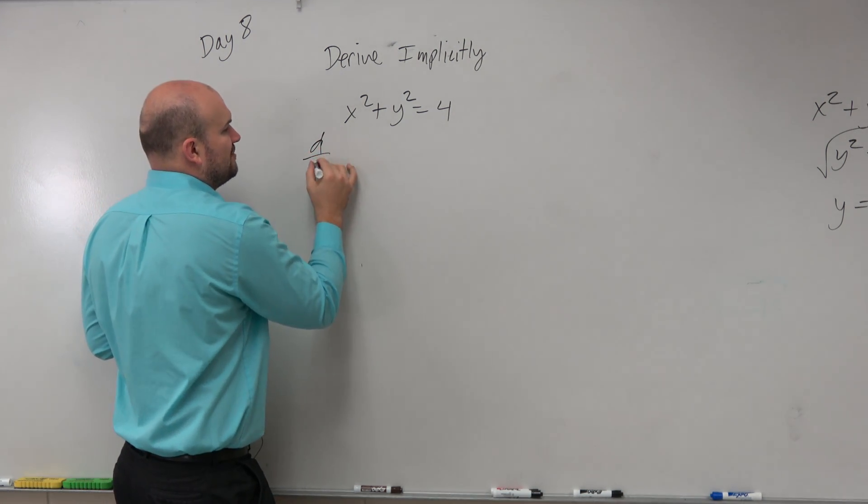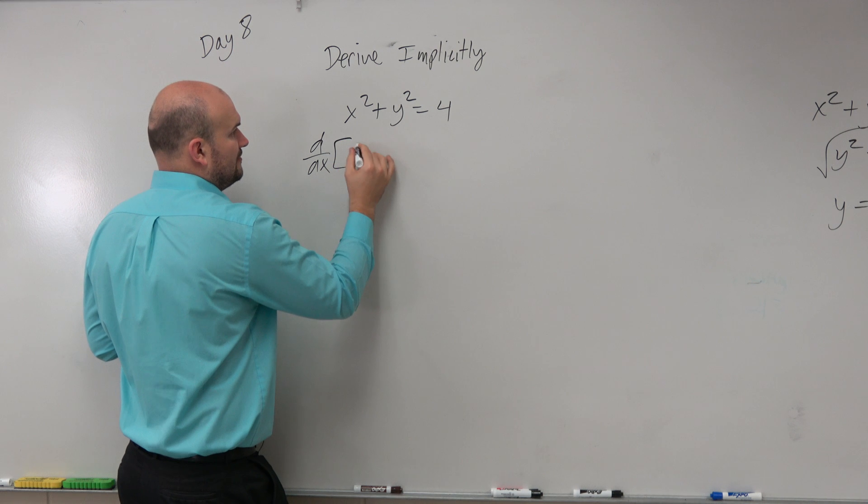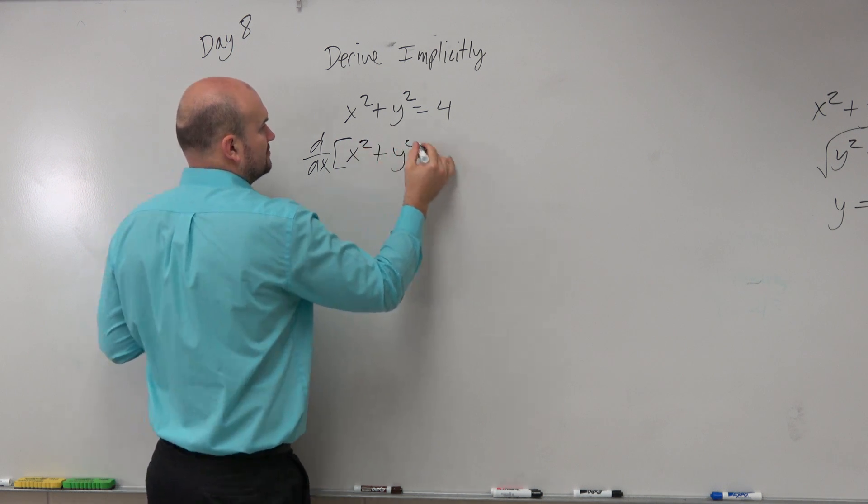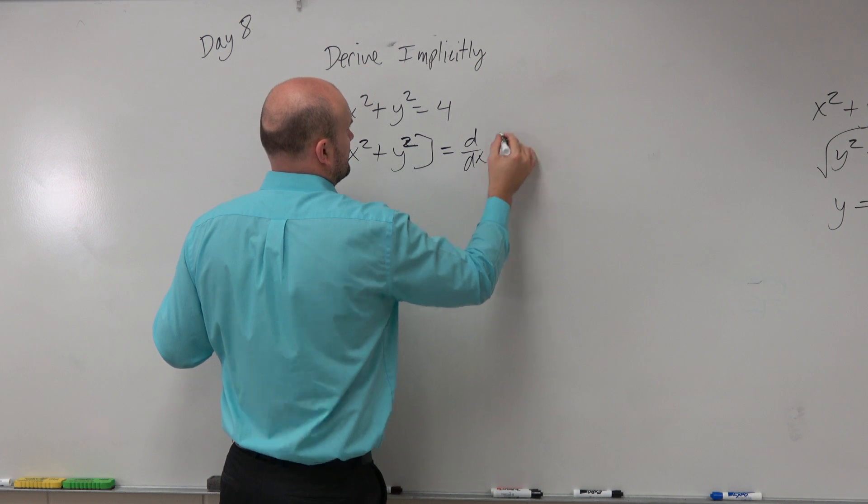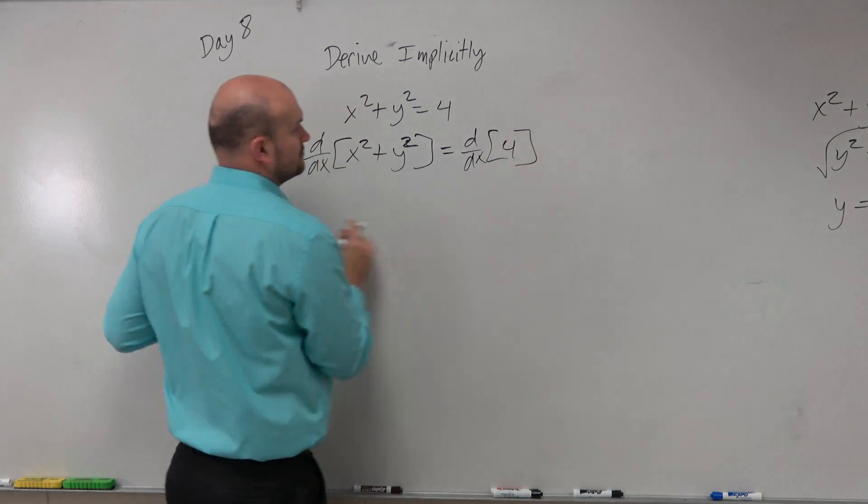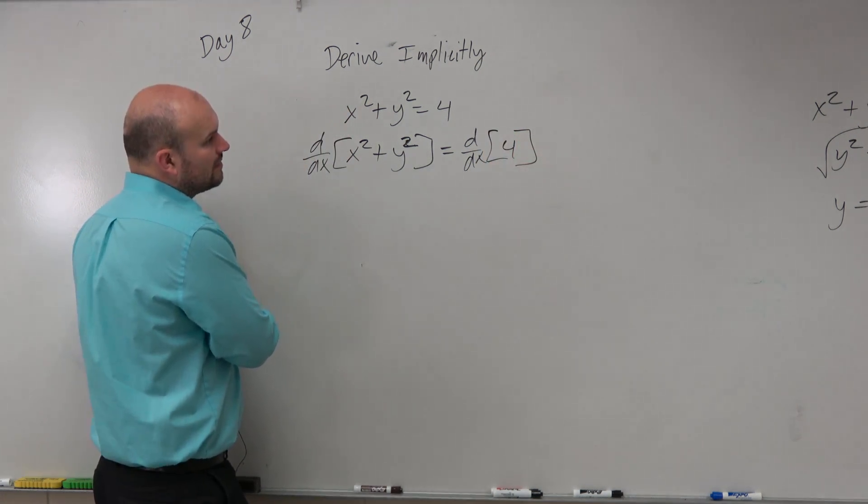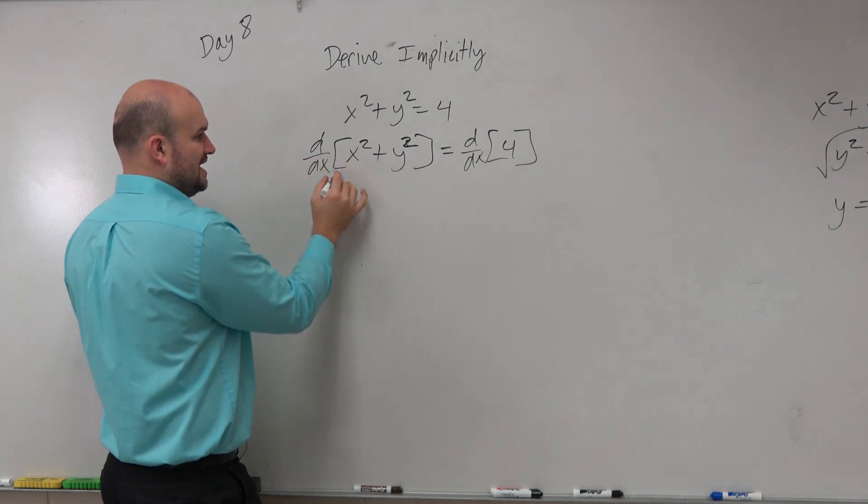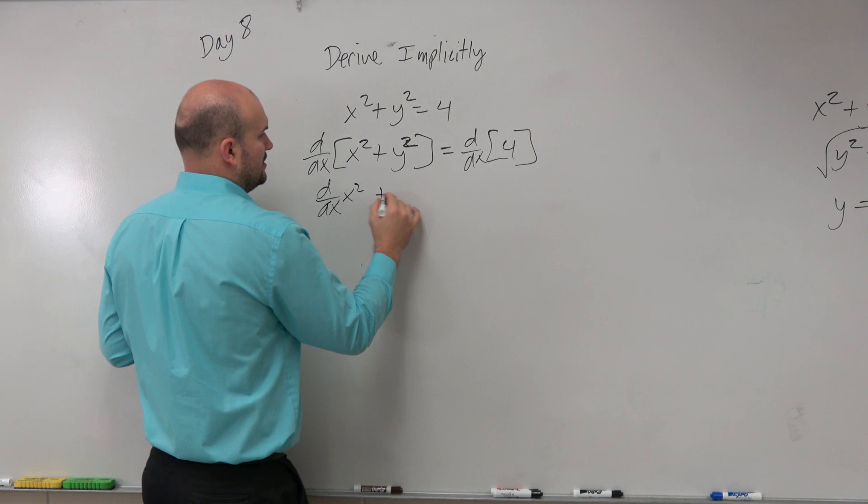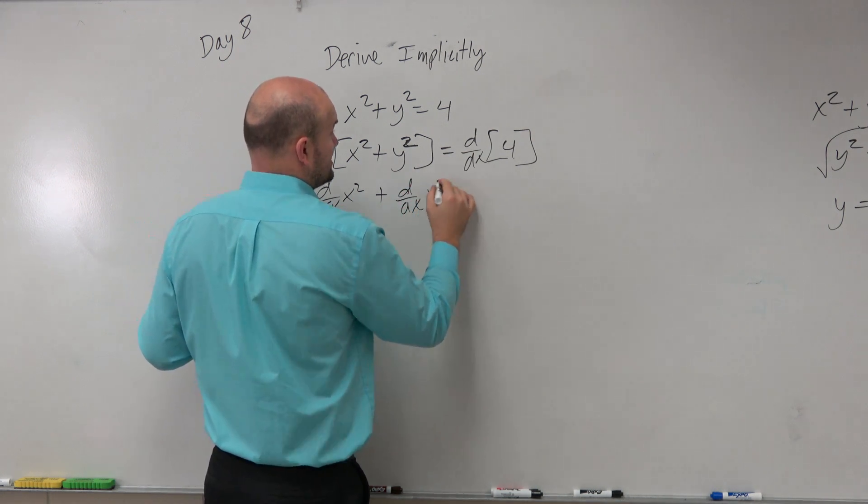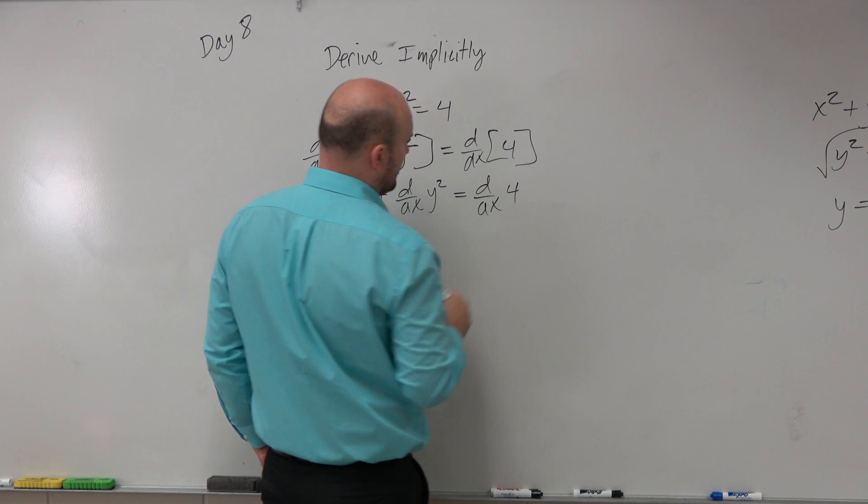but if we go ahead and differentiate with respect to x on both sides, what we're going to have in this case is we can now take the derivative of d over dx of x squared plus d over dx of y squared equals d over dx of 4.